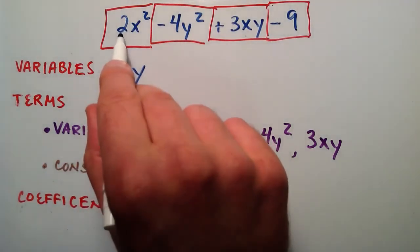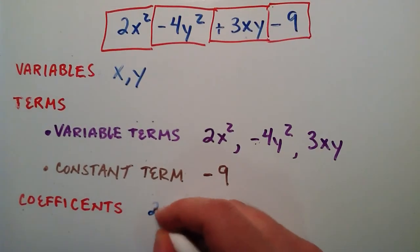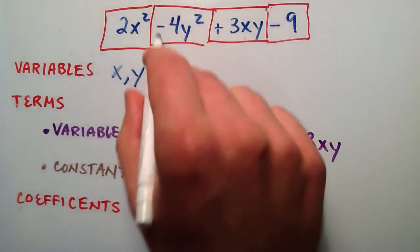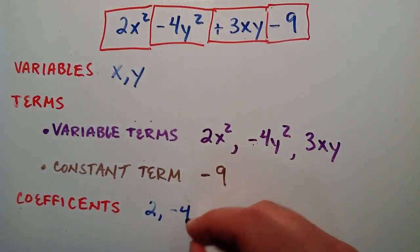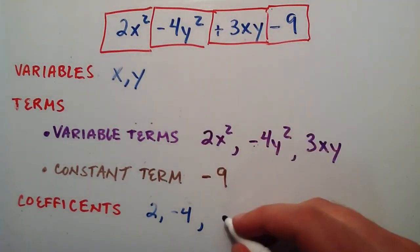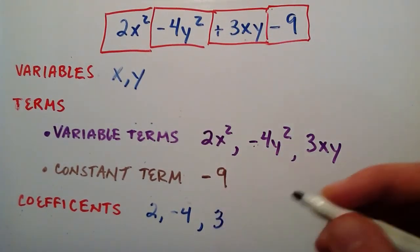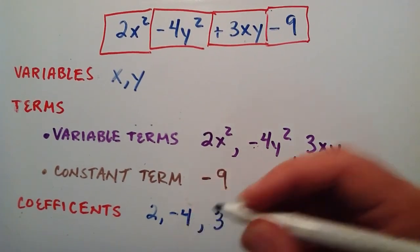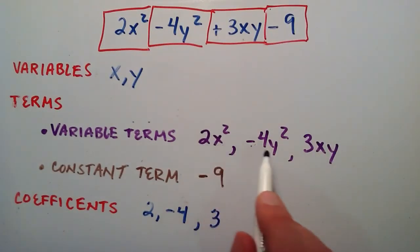We've got a coefficient of 2 here, we have a coefficient of negative 4 here, and a coefficient of 3 here. So the numbers that are attached to our variable terms are called the coefficients.